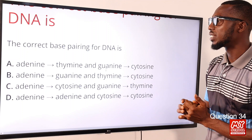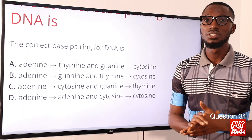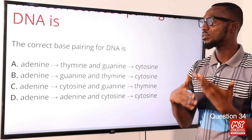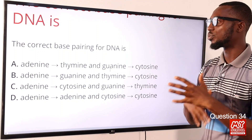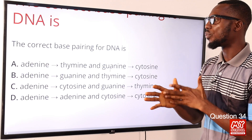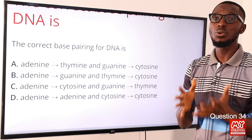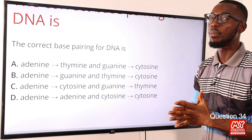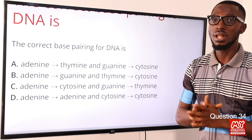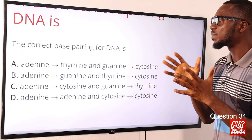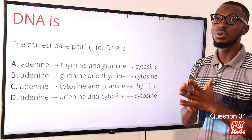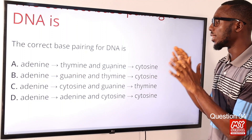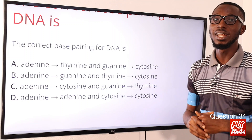The correct base pairing for DNA is what? When you talk about a protein, it is made up of chains of amino acids, and we give this description to polypeptide. So the sequence of bases in a DNA molecule will tell you the type of amino acid and other information. The correct base pairing for a DNA molecule is adenine to thymine and guanine to cytosine. So the correct option here is option A.